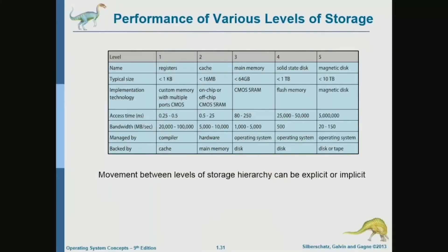There are different levels of storage in the system — we looked at this last time. We have the fastest storage devices, which are the registers, then the cache, main memory, solid state disk, and magnetic disk. They vary considerably in speed.